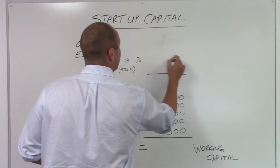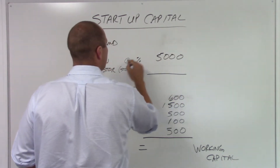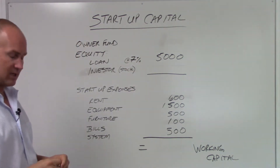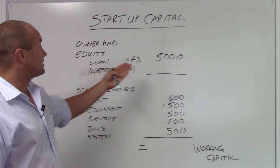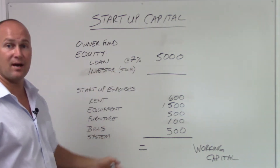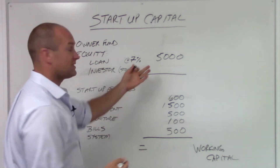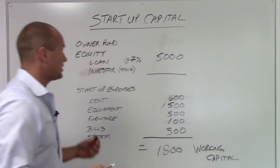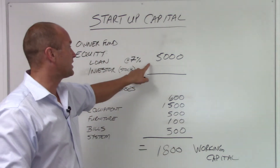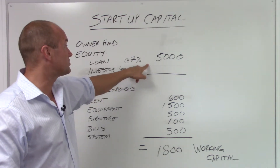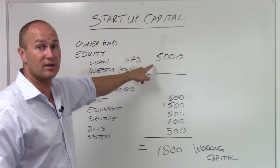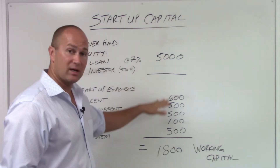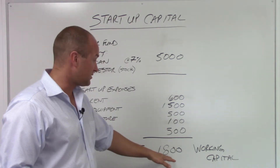Say you take a loan out for $5,000 to start a small business and pay 7% interest on it. You'll be able to get your startup capital, get your stuff set up, and still have a decent amount of working capital to get started. Within the first year, if you do it right, you should be able to pay that back with interest easily. It gives you money to get started with and some working capital to last you a month or two.